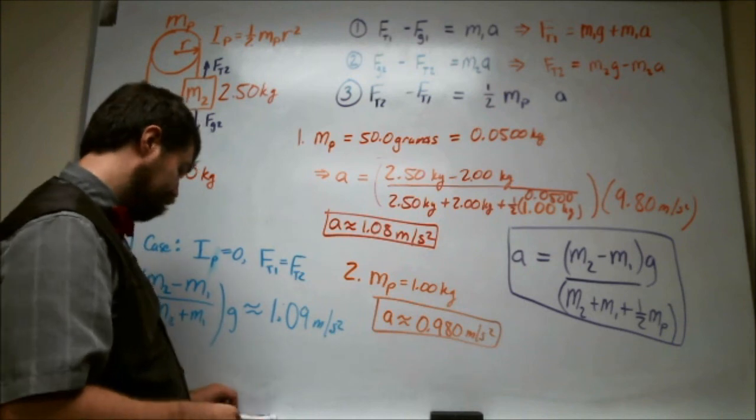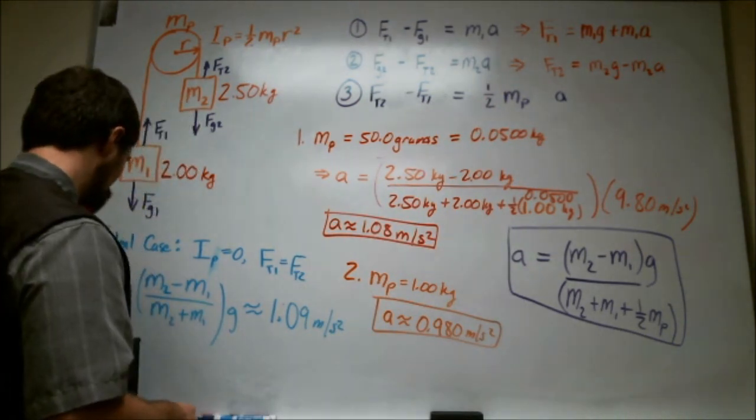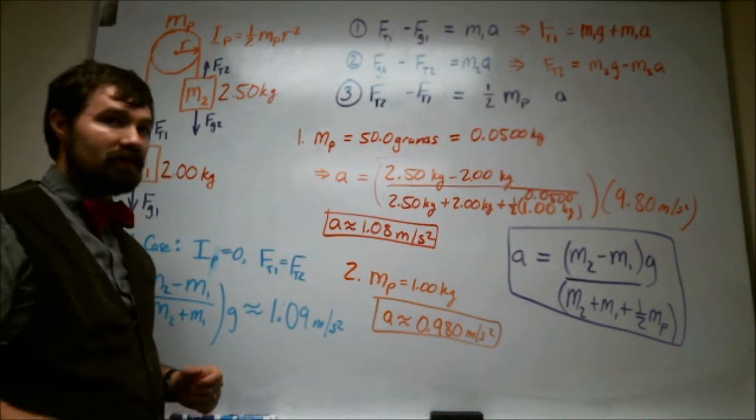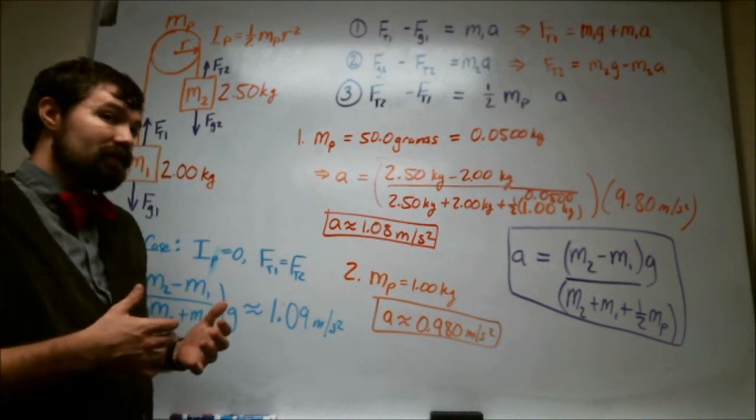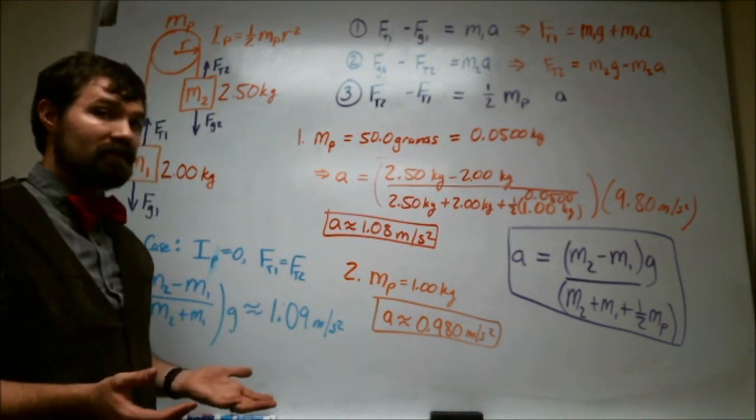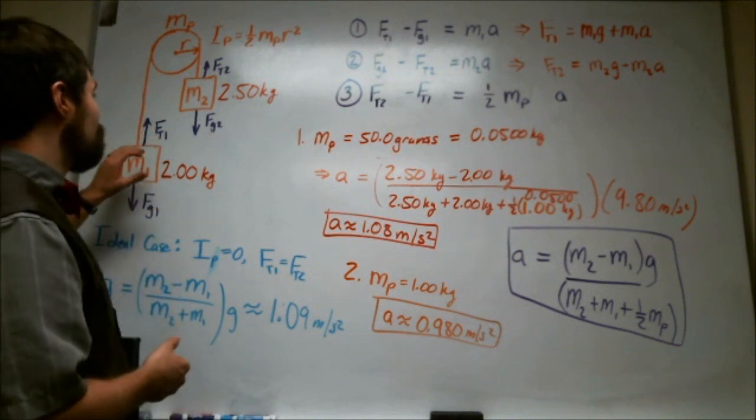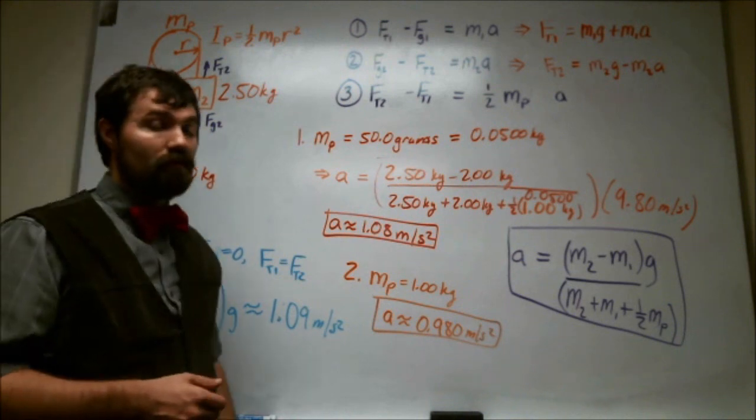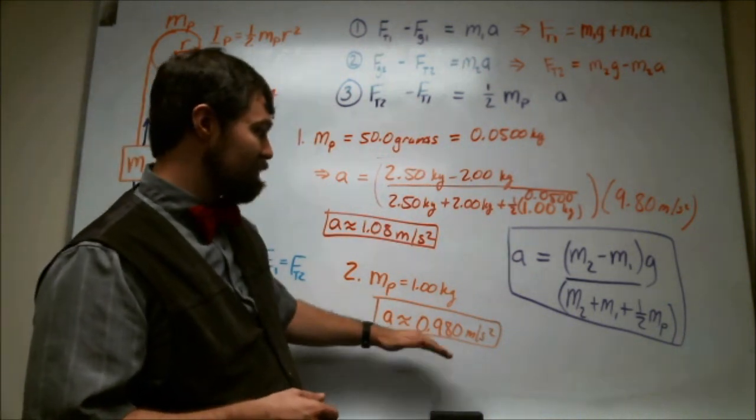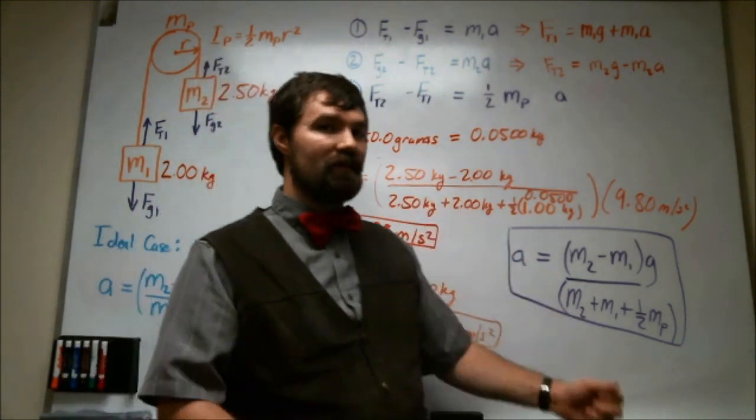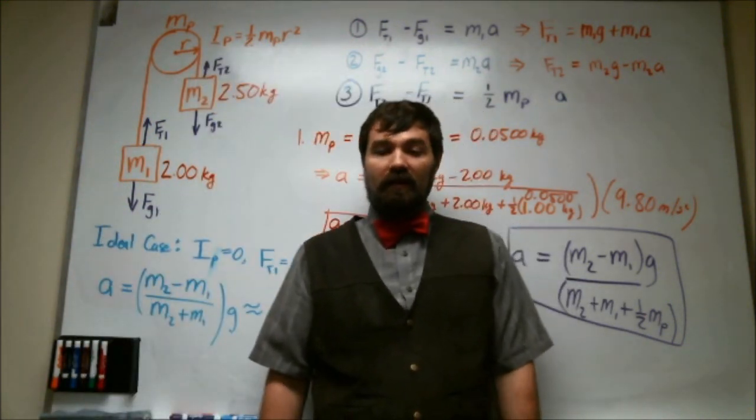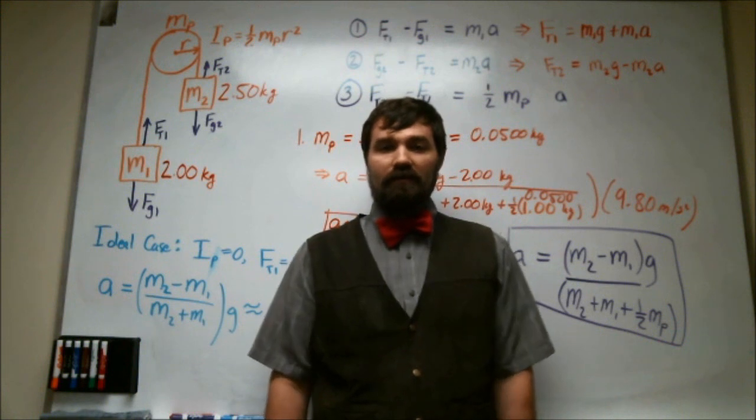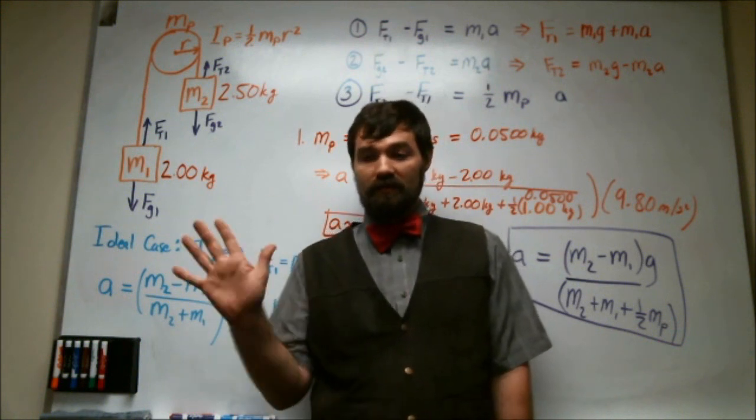So that means that once this mass of this pulley starts getting comparable and once the moment of inertia gets sizable, we start seeing a more drastic effect on the actual acceleration of these two blocks. So it's a 10% difference as opposed to a 1% difference. And that's all I've got time for today. So I hope you've enjoyed this video and thanks for watching.